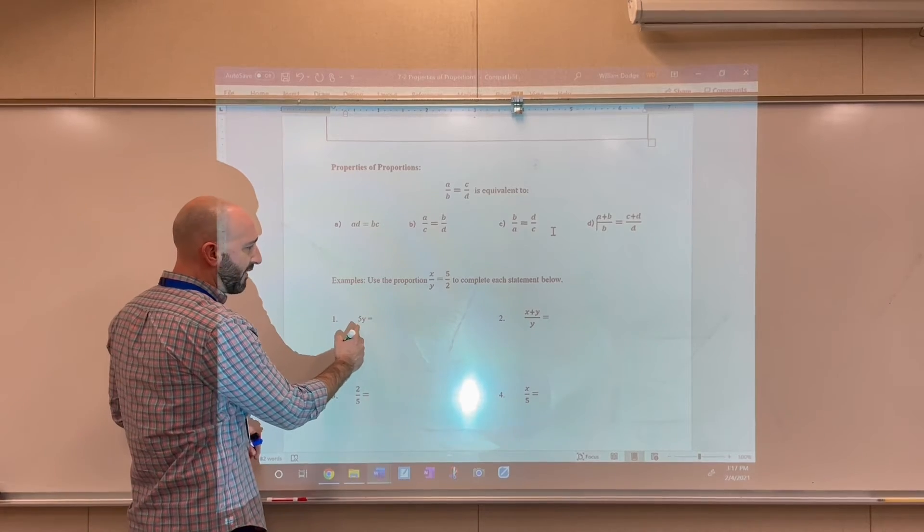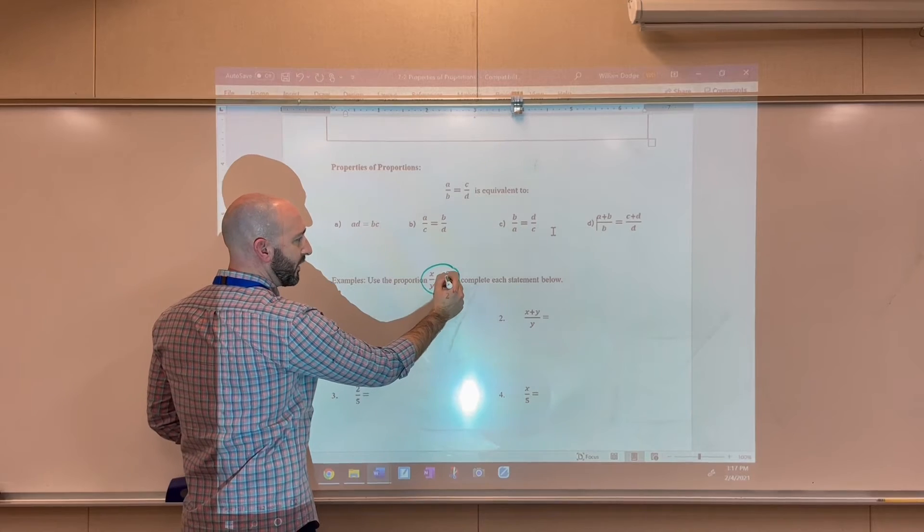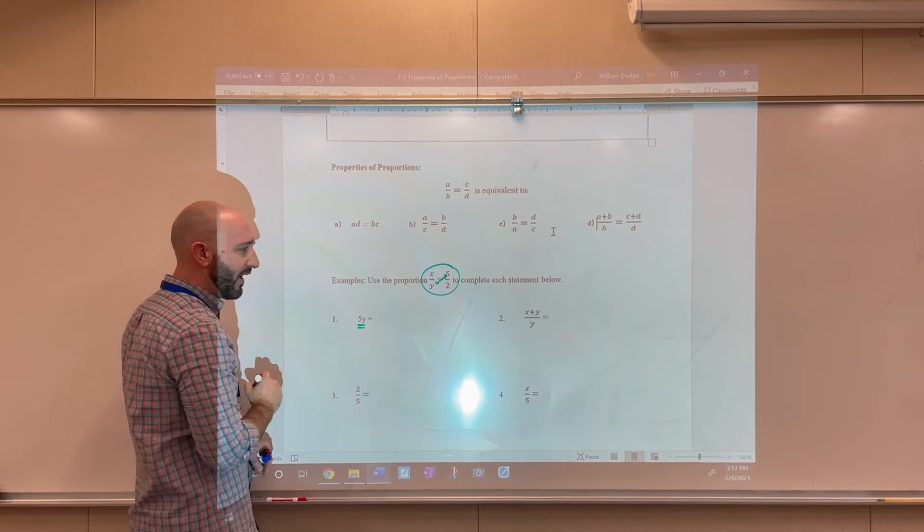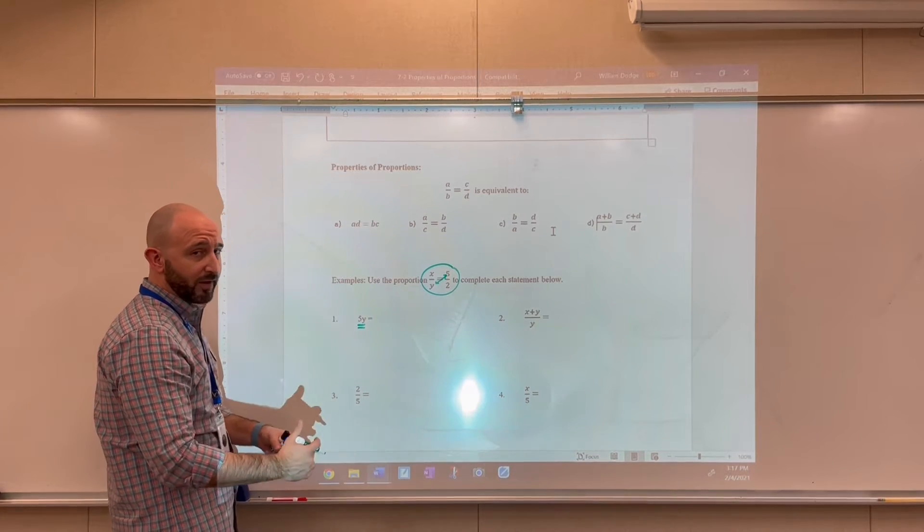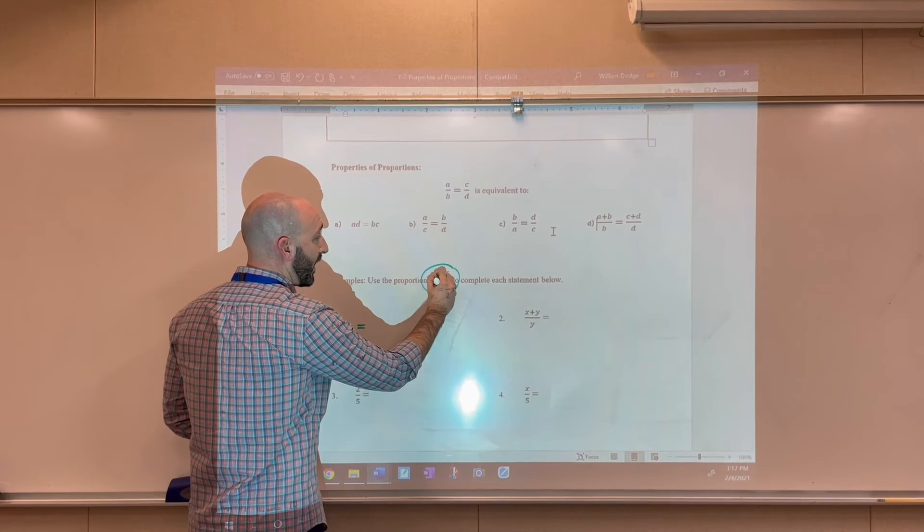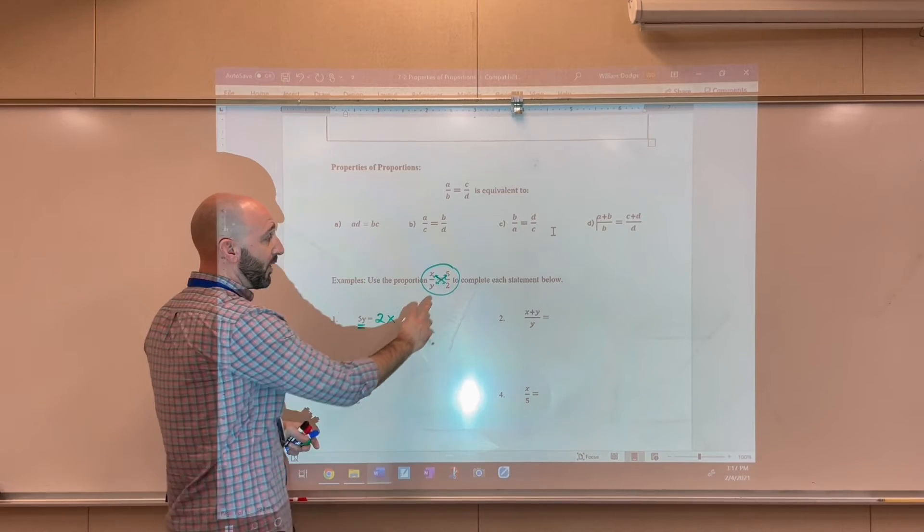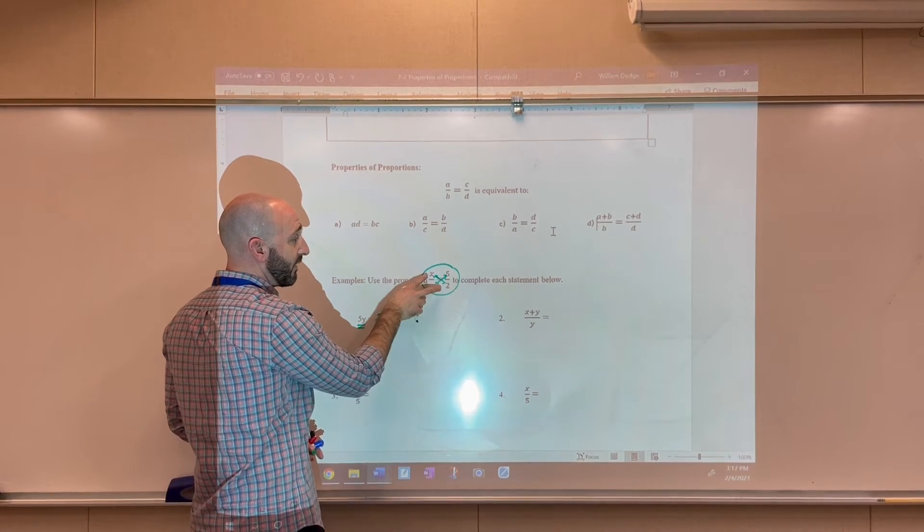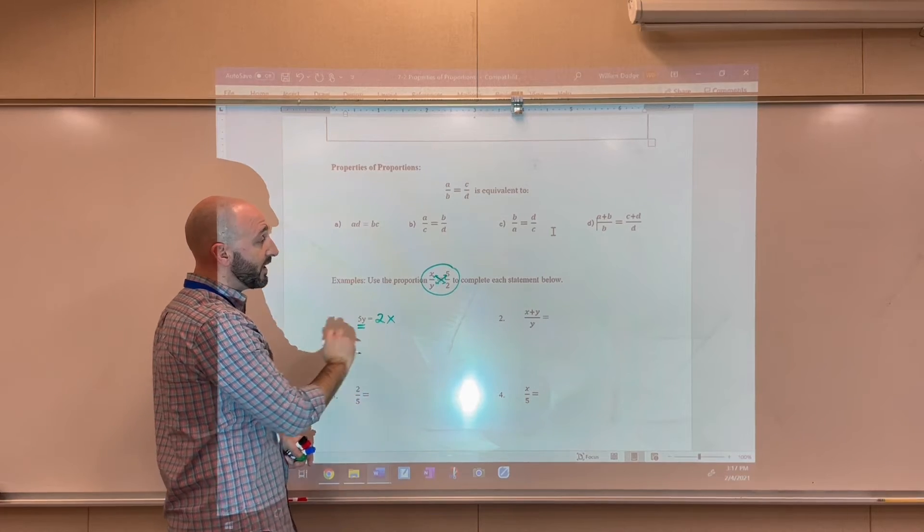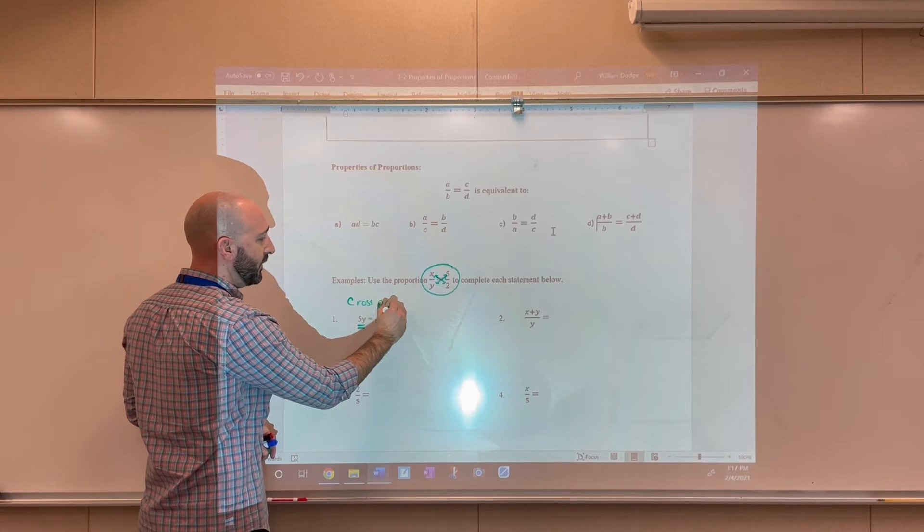So we're starting with this proportion. And really what's happened here is it looks like we've multiplied 5 and y together to get 5y on one side of the equation. So it looks like the cross product property is being applied. So that means we can multiply x times 2 and get 2x. So we can multiply the extremes together and also the means together. And that product or the products of those are going to be equal to each other. So this is just an example of how the cross product property would work.